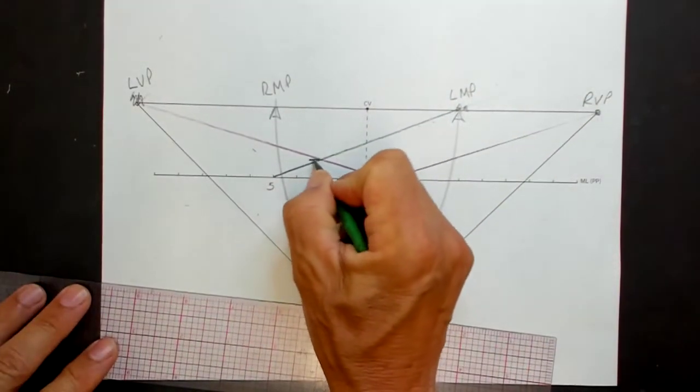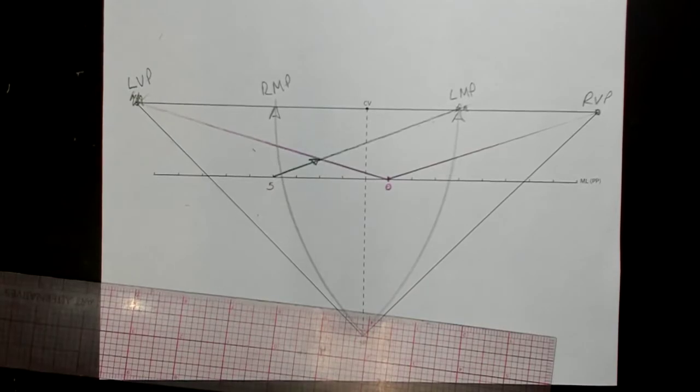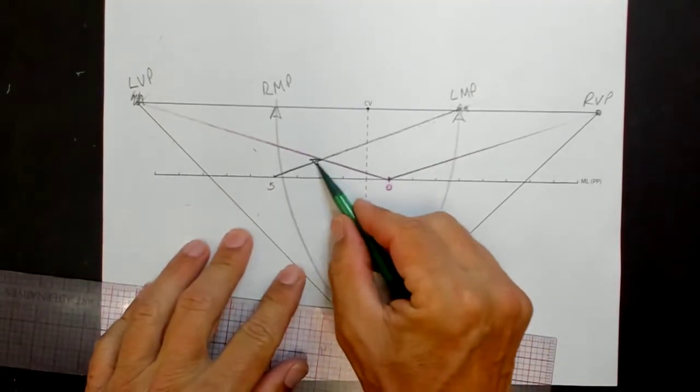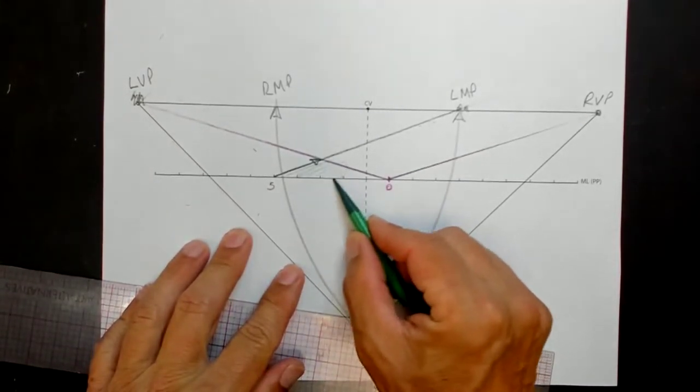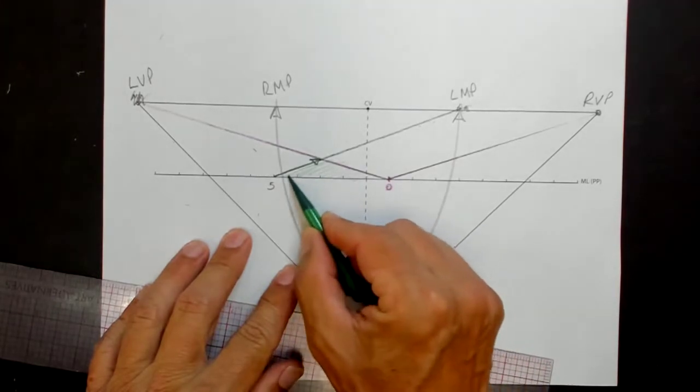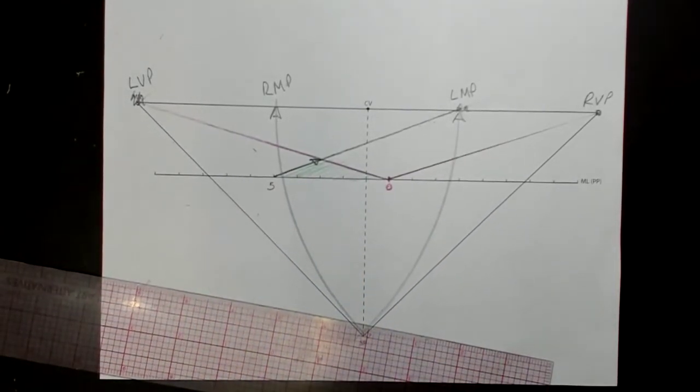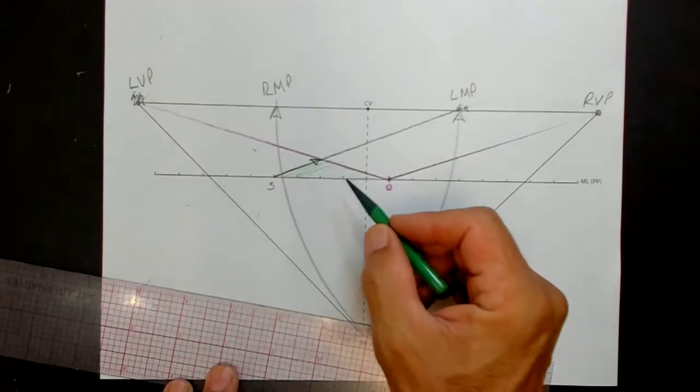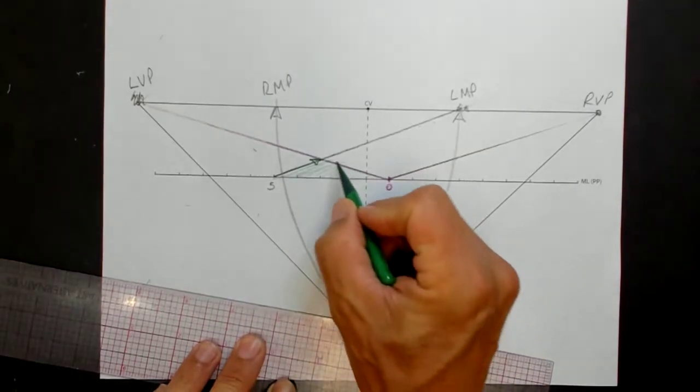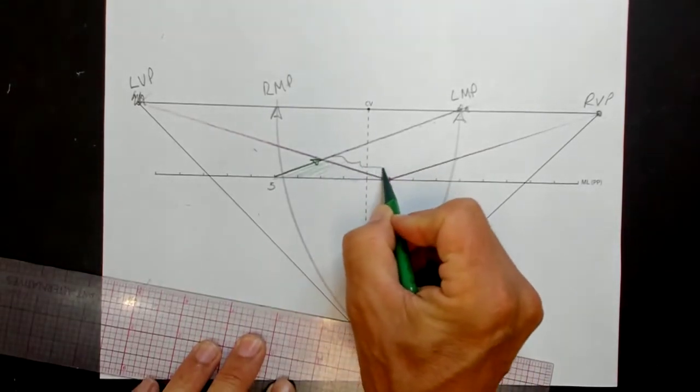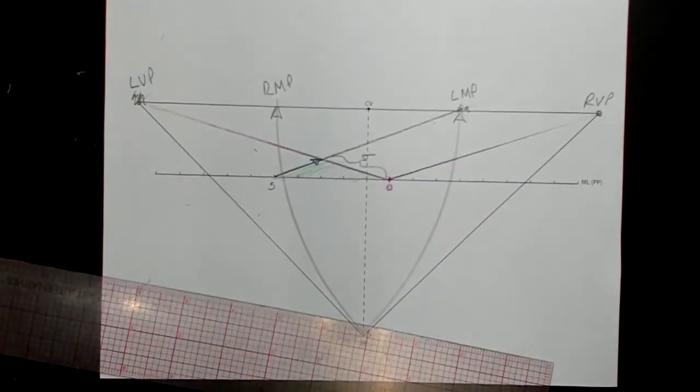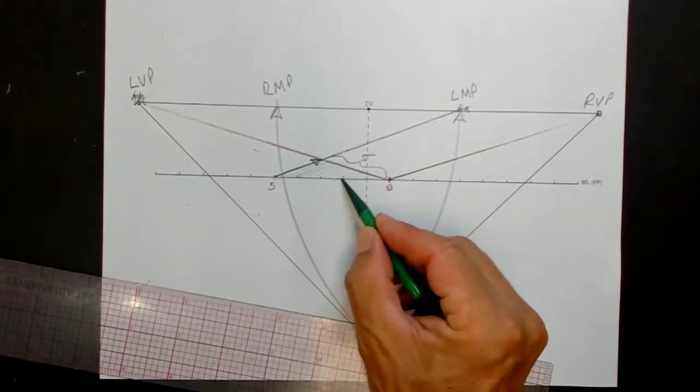And this creates an isosceles triangle. This is the isosceles triangle here. In one point perspective, that isosceles triangle was a right angled isosceles triangle. But in two point perspective, it's still an isosceles triangle, but it's not a right angled isosceles triangle. Here's this length, five. That means this has to be five also. So these are the two legs of the triangle.